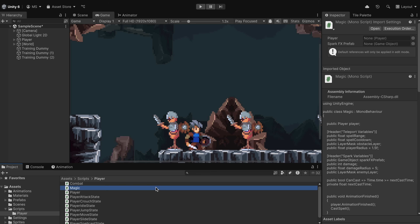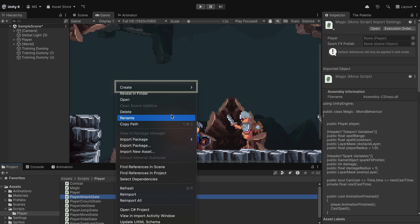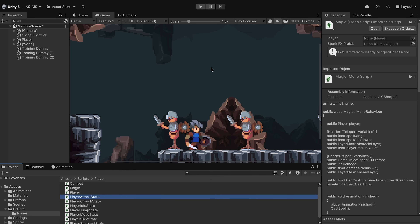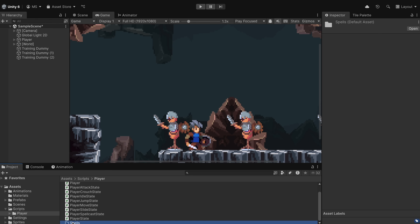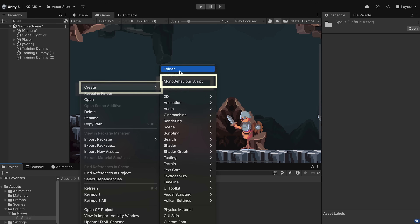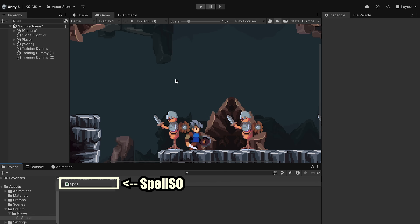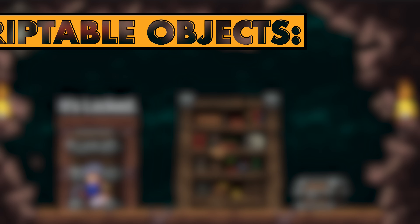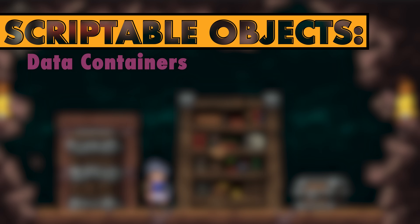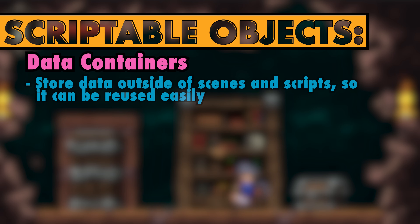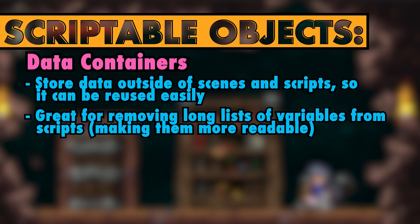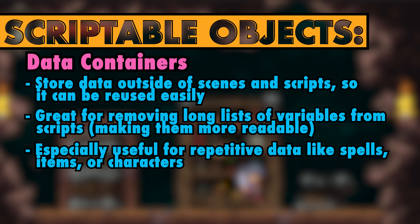Let's get started. The very first thing we're going to do is get scripting. Let's head into our player scripts and create a new folder here — we're just going to call this one spells. Once inside there, let's create a new script which we can call SpellSO for scriptable object. Scriptable objects are essentially data containers that let you store information separately from game objects and scenes. They're especially useful for keeping your data organized and reusable, which will work especially well in our case where we could have a bunch of spells down the road.